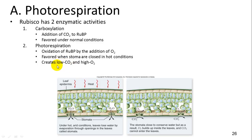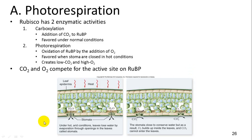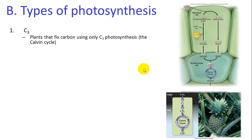Photorespiration creates a low CO2, high oxygen environment that is unfavorable for carboxylation. When it gets too hot, stomata close and photosynthesis essentially stops, because CO2 and O2 compete for the same active site on RuBisCO.